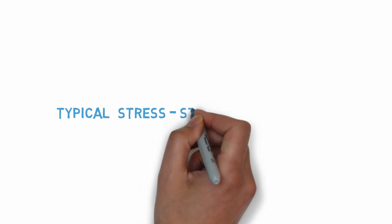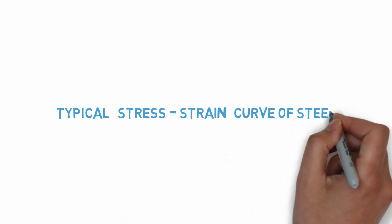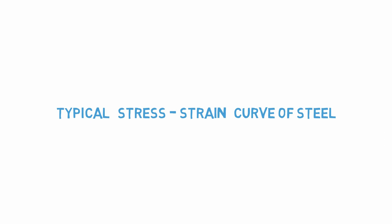We are now going to examine the resulting stress-strain curve of steel materials. At the beginning of the test, the stress is directly proportional to the strain. The slope of the curve is called Young's modulus. The stress at the end of the straight line is called the proportional limit.